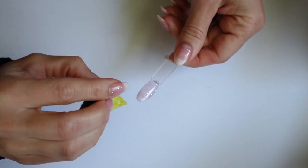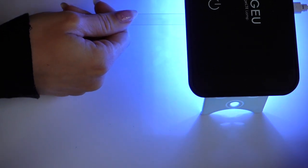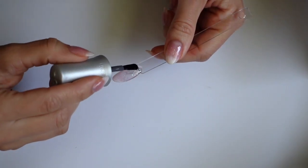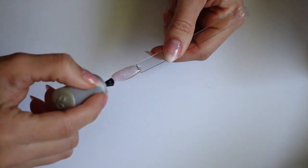So once that is done, I'm popping it back in the lamp to cure before pulling it out and applying a nice generous top coat. I'm using Jellish's Top It Off, painting this over the entire nail, capping the edge, and then popping it back in the lamp one more time.